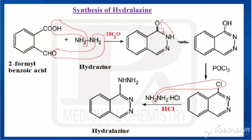We then proceed to chlorination using POCl3. The OH group is replaced, giving us the chloro derivative. With that, we add hydrazine hydrochloride — the Cl combines with H and is removed as HCl. The NH-NH2 group then occupies the place of the chlorine, and we obtain hydralazine.